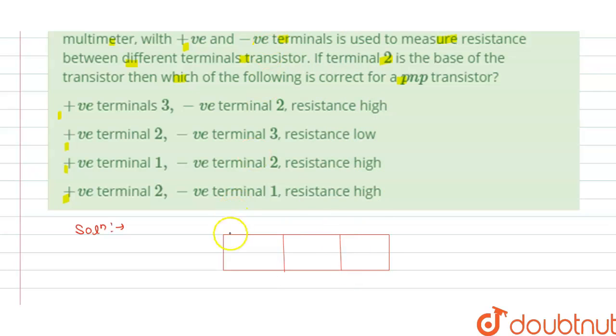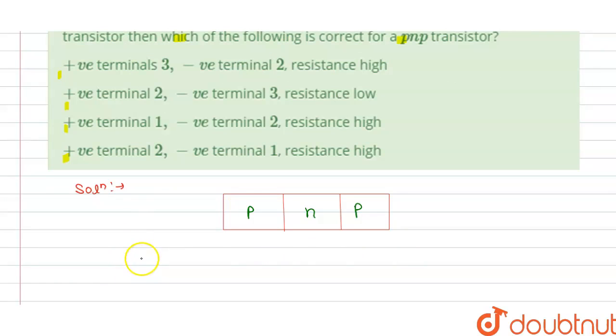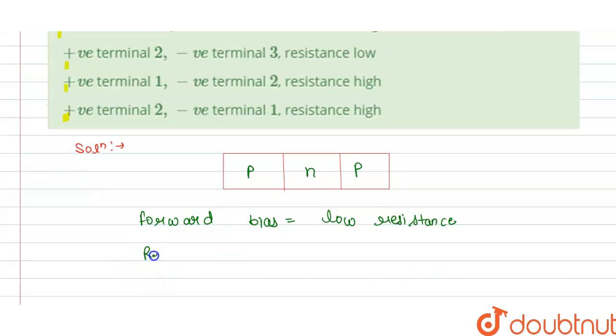So we know that if it is forward bias then it has low resistance, and if it is reverse bias then it has high resistance.